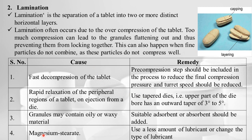Problems related to excipients causing lamination: if the granules contain oily or waxy material it may result in lamination — add suitable adsorbents to the granulation. If magnesium stearate is used in excess, use a lesser amount or change the type of binder. Magnesium stearate can also result in lamination.